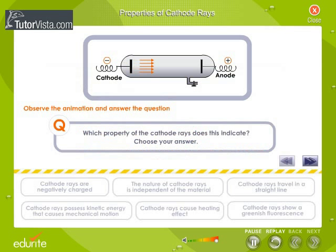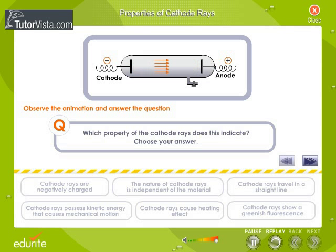A fluorescent light is seen on the glass wall of the tube. Which property of the cathode rays does this indicate? Choose your answer.